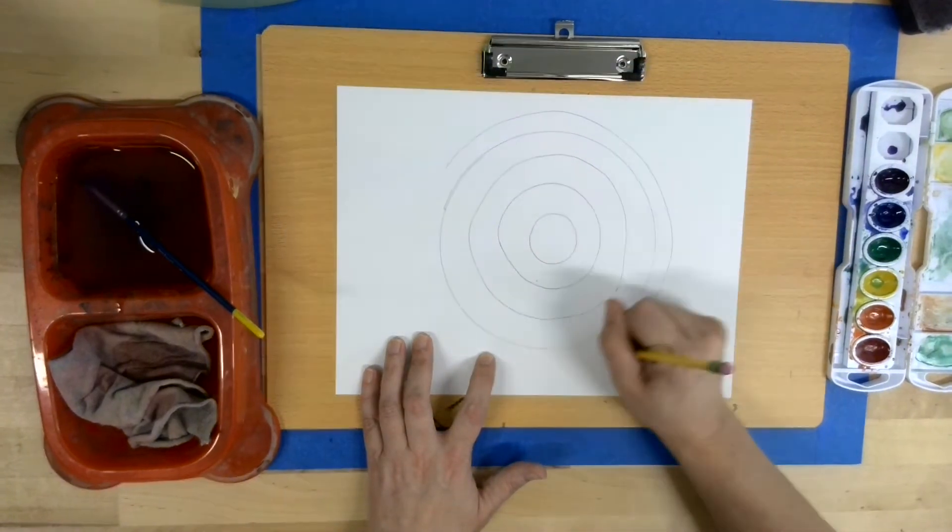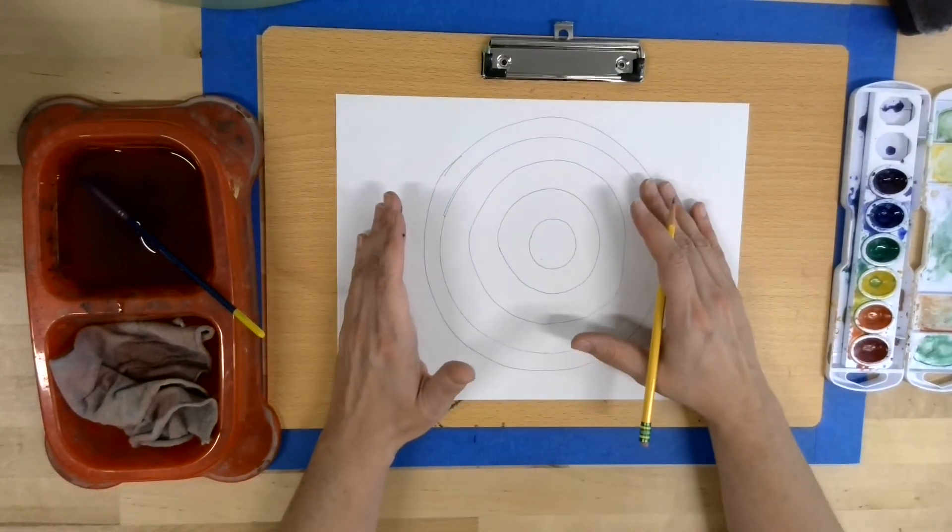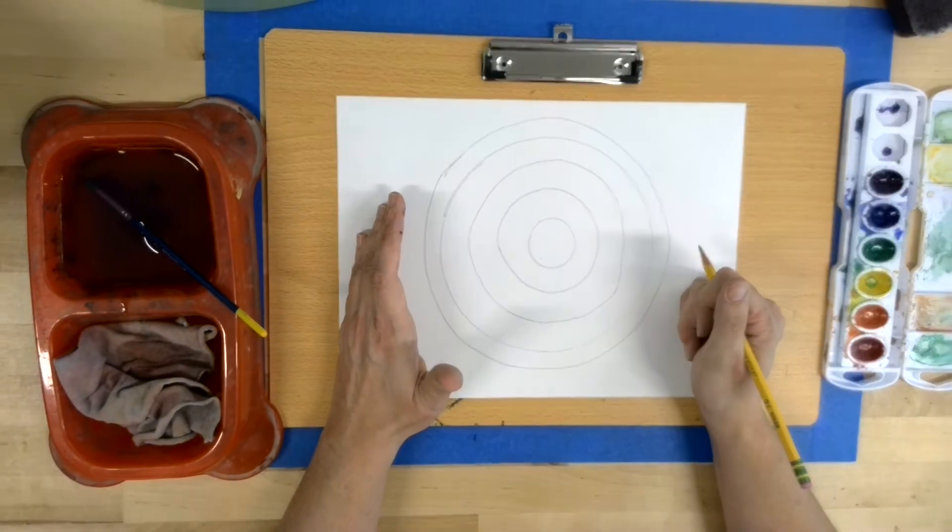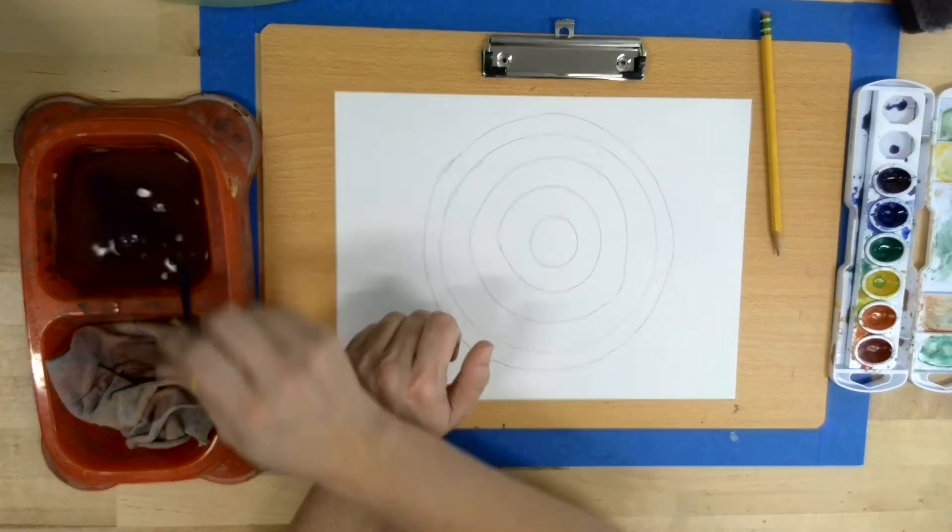Our goal is to have four to six concentric circles. You can see that the last circle that I had was created freehand.